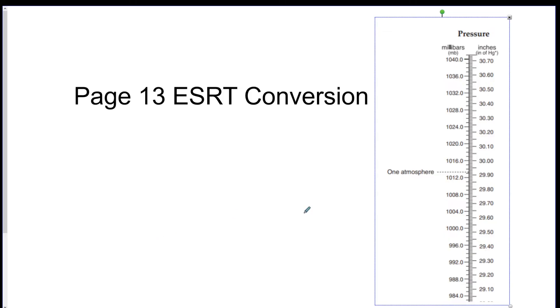So on this page here on page 13 there is a pressure conversion graph here. And if you look on the left side you got millibars and on the right side you got your inches of mercury. And we can convert between these. The little lines on the left go up by ones. So this would be 1,020.